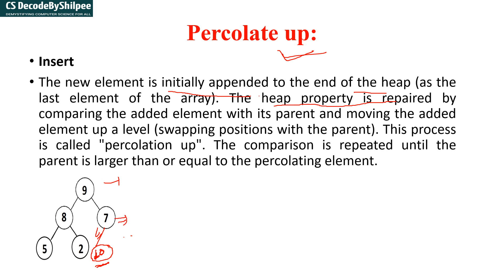You are swapping with the upper level. This level is 2, this level is 1, and this level is 0. So you are going to swap with the upper level. So 10 is going to swap with 7 — 10 comes here and 7 goes down. Now again check: is 9 greater than 10? No, condition fails. Since this is a max heap, 9 is not greater than 10, so this becomes 10 and this becomes 9. You are always swapping with the upper level, and because of that reason this process is called percolate up.